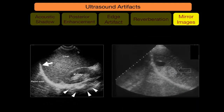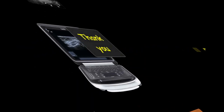Mirror image artifact — a duplication of an image appears along a highly reflective structure like the diaphragm. The sound wave hits the diaphragm, rolls around it, and returns after a time delay. The machine interprets that delay as another structure in the deeper field — so you may see another liver, another kidney, or another hepatic lesion in that area. That is all, and thank you very much.